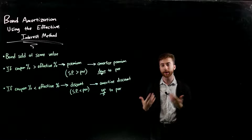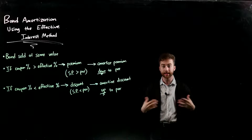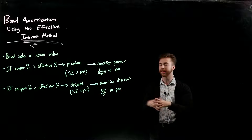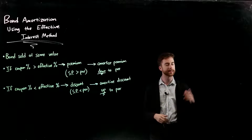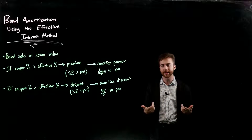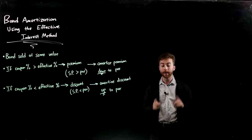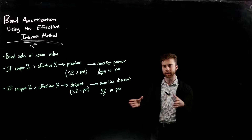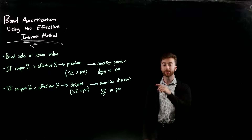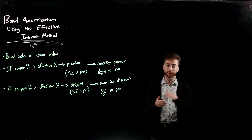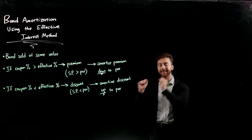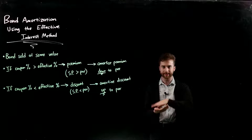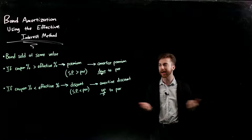The benefit for the company is that they got an immediate inflow of cash — they got that cash, then went and expanded their operations, improved their business, whatever they wanted to do with that immediate inflow. The consumer, on the other hand, is basically giving up however much money the bond cost in the first place to get those coupon payments over time, and then the original amount they paid back at the end. So their benefit is that they got to receive those coupon payments and earn money like that.